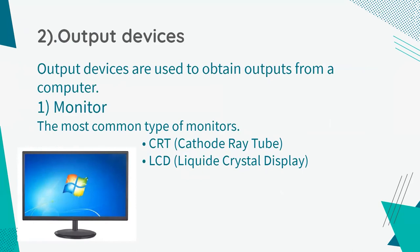Let's move on to the second main component, which is the output devices. Output devices are used to obtain outputs from a computer. The first output device I'm going to talk about is the monitor. The most common types of monitors are CRT and LCD. CRT means cathode ray tube, and LCD means liquid crystal display. In the present, most monitors are LCD.